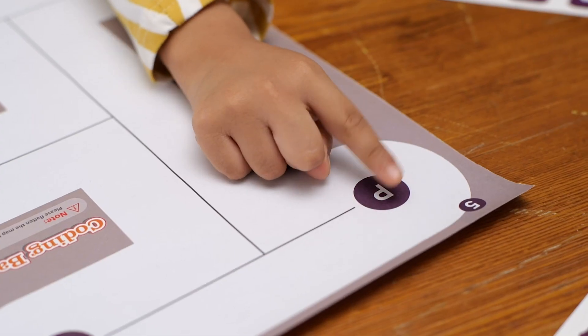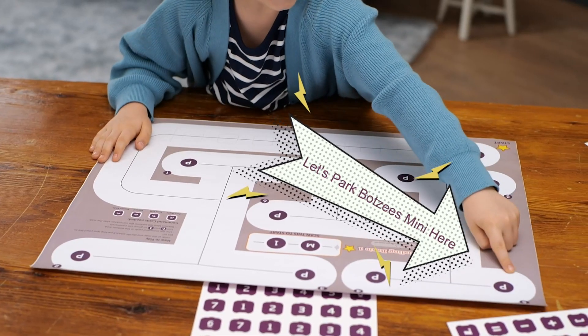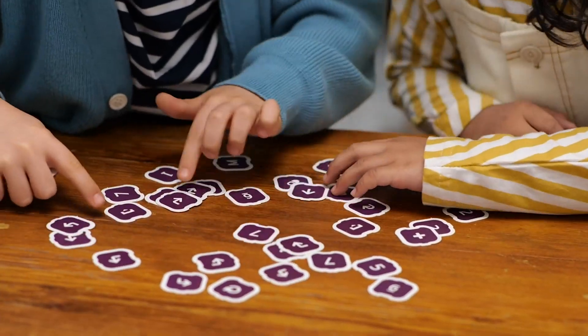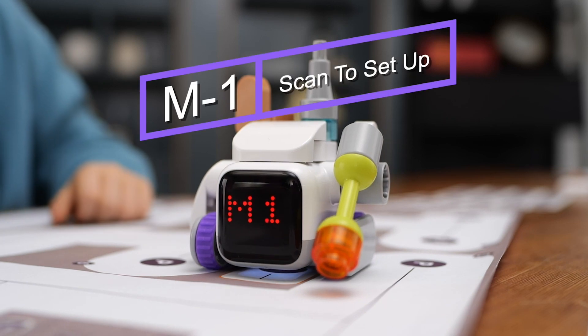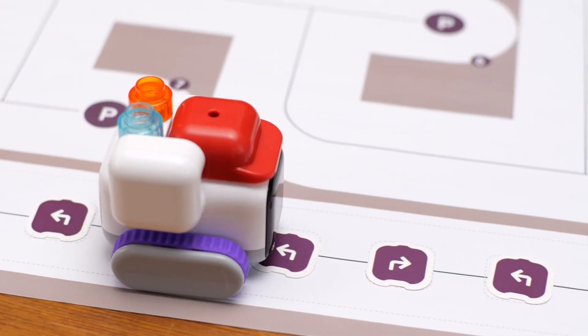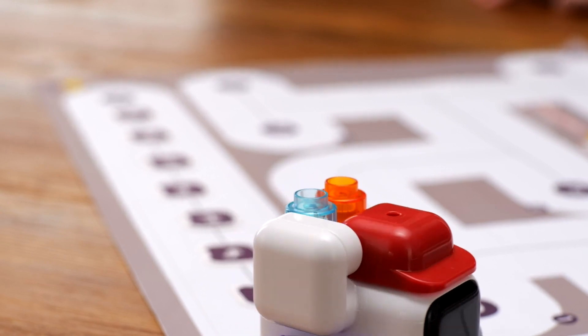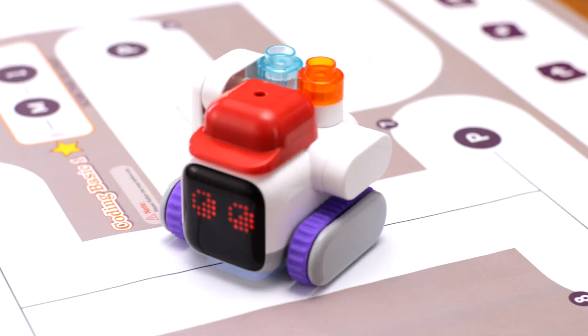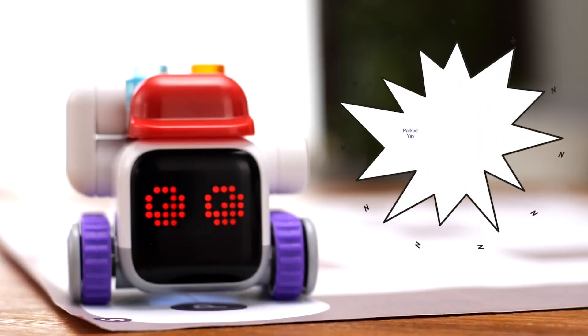Let's park BOTSYS MINI to the assigned spot. Find the correct command cards and put them in the coding area in the correct order. No mission! Scan the map code on the top, then see BOTSYS MINI follow the map line and execute the commands to park at the correct spot. We did it!